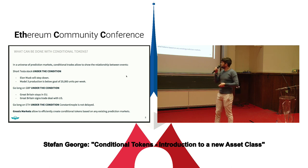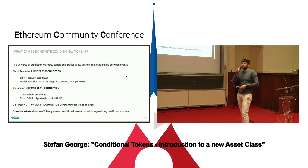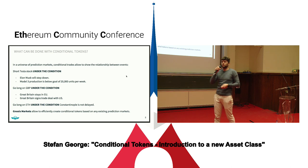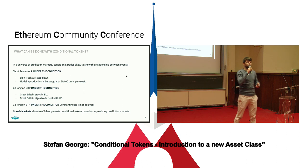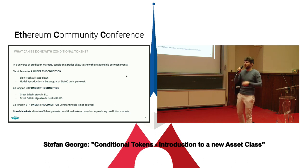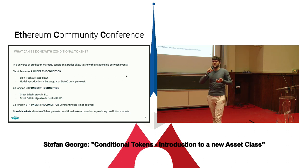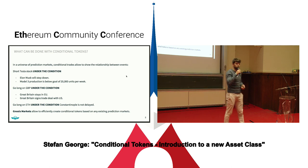To give some more examples, we could also create such conditional assets within the Ethereum ecosystem. We could create conditional assets on EIPs. We could signal what is the change of the ETH price under the condition that an EIP is implemented, or what is the change of Ethereum transaction fees under the condition that a certain EIP is implemented. Those conditional assets could give very clear signals to the community and shareholders about how decisions should be made.